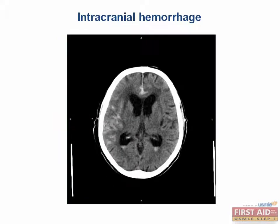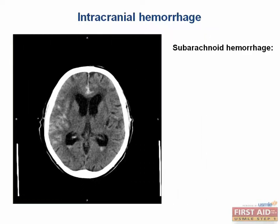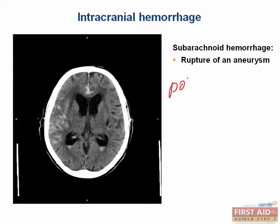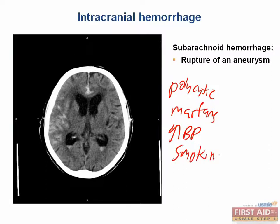A subarachnoid hemorrhage occurs in the space between the arachnoid and the pia layer, which contains the major blood vessels of the brain. Hemorrhage occurs when an aneurysm or an AVM ruptures. Risk factors for aneurysm development include polycystic kidney disease, Marfan syndrome, hypertension, and smoking, among others.